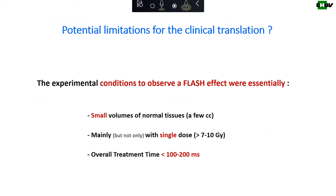There may be some potential limitations for clinical translation. To observe a flash effect in the preclinical setting, there have essentially been small volumes of normal tissues irradiated — a few cubic centimeters — mainly but not only with single dose. The effect is more obvious above 7 or 10 gray, and the overall treatment time has to be below around 100 milliseconds, though 200 milliseconds may still show the effect.